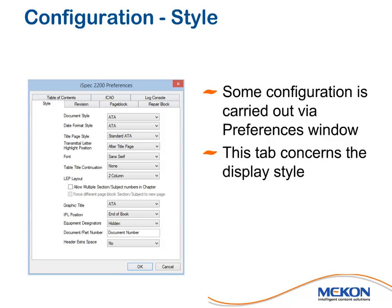Here is the beginning of the preferences tabs, and we're looking at the configuration of the style. Some of the configuration is carried out by this preferences tab — this is the display style. You can see things like document style, document form style, date form style, and there's also other areas in there such as graphic type. This enables you to set it up in the way that you want.